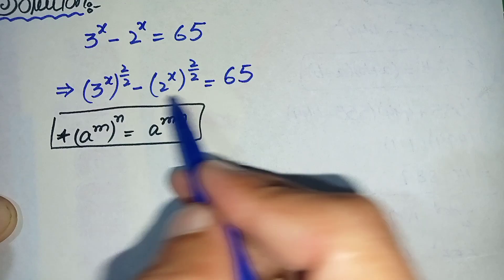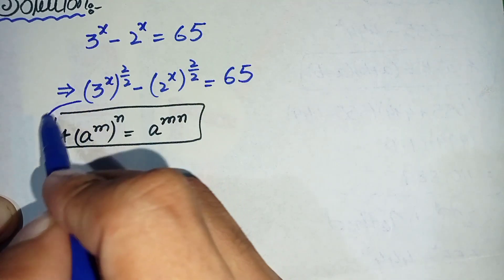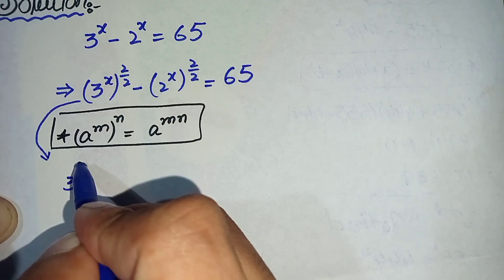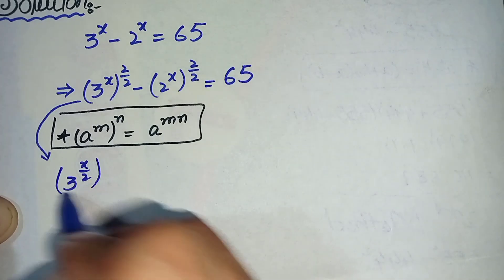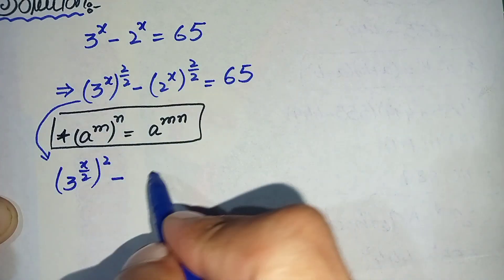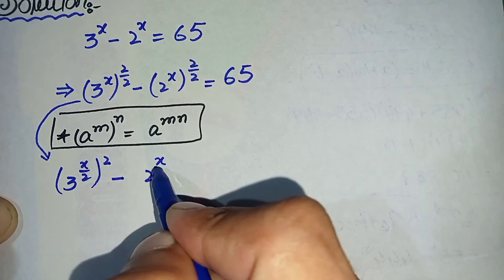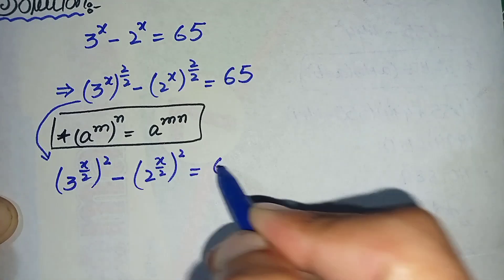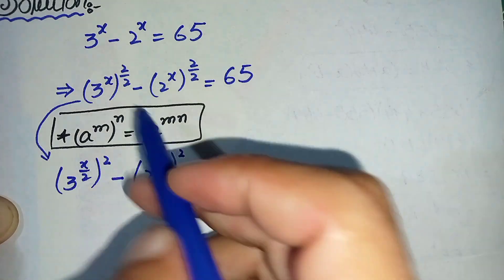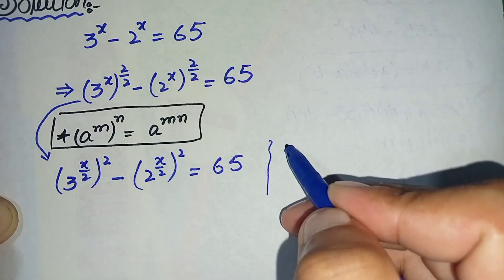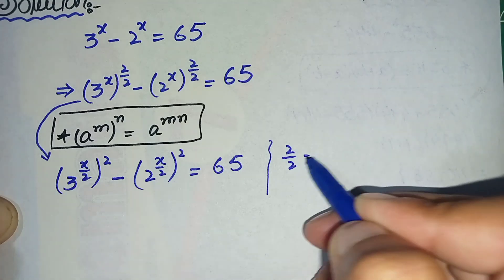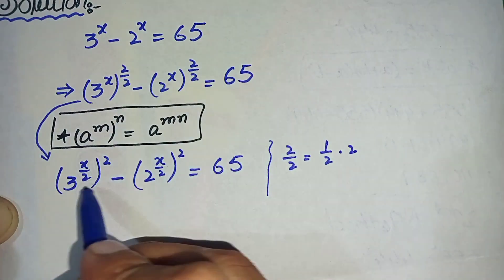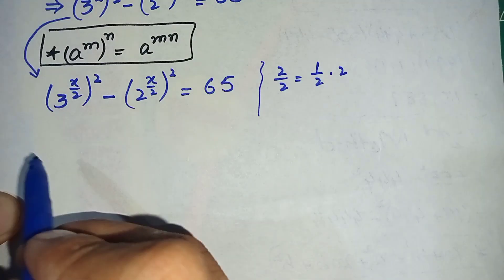By using the exponent formula — where (3^x)^n can be written as 3 raised to power x times n — the left hand side becomes: 3 raised to power x/2, whole raised to power 2, minus 2 raised to power x/2, whole raised to power 2, equals 65. This is because we write 2/2 as one-half times 2, multiplying the power inside the parenthesis with x.